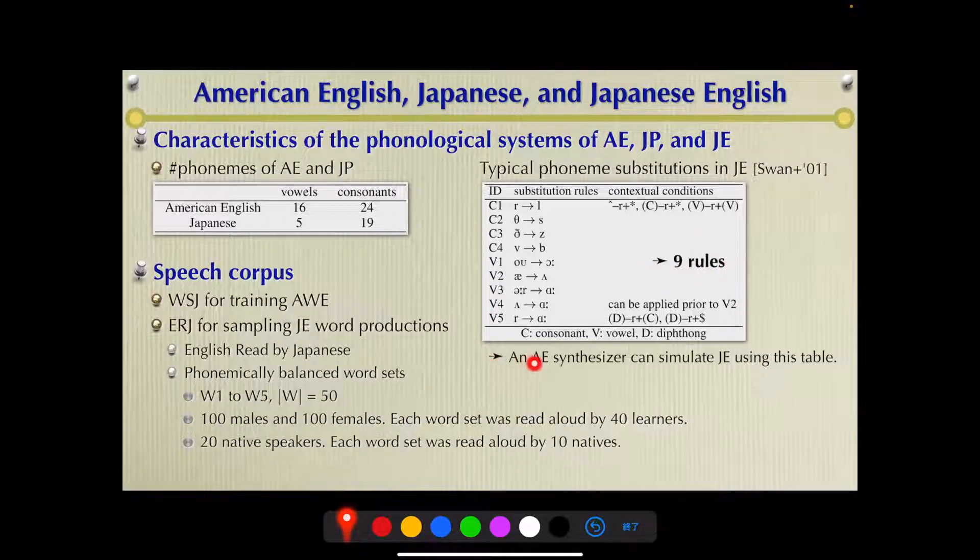What kind of corpus were used? Wall Street Journal was used for training acoustic word embedding extraction, and English read by Japanese, ERJ, was used for sampling Japanese English word productions.